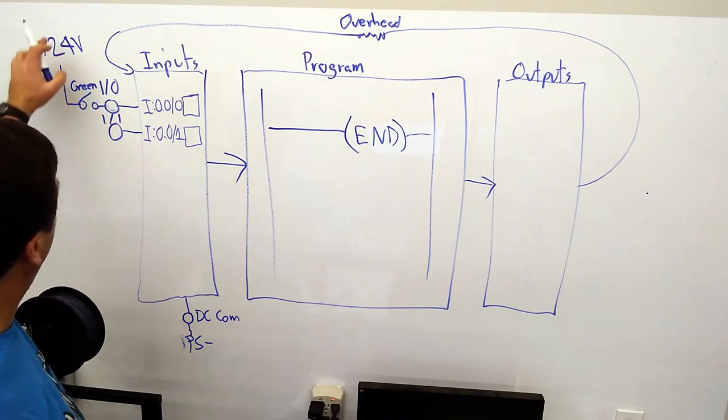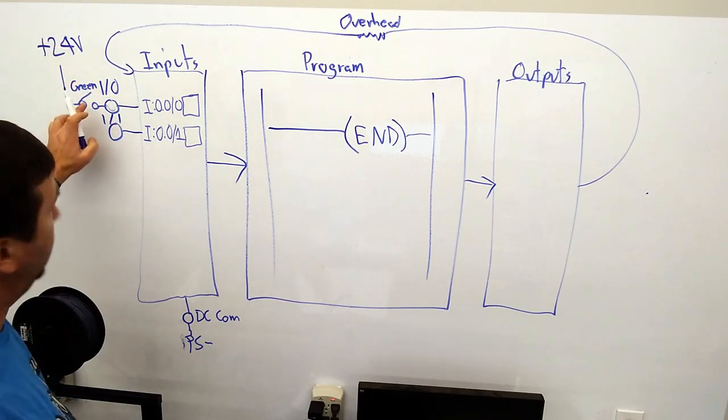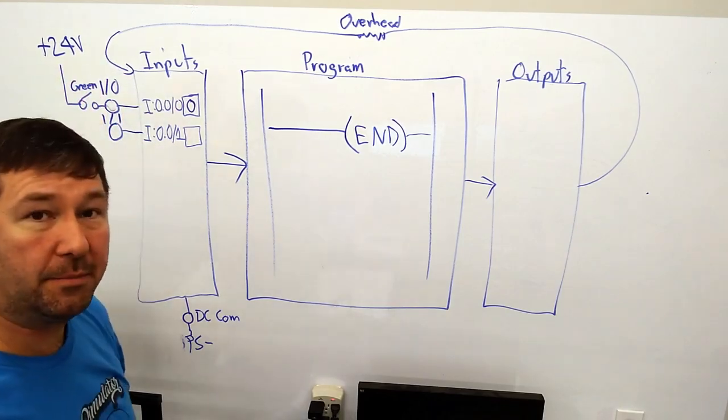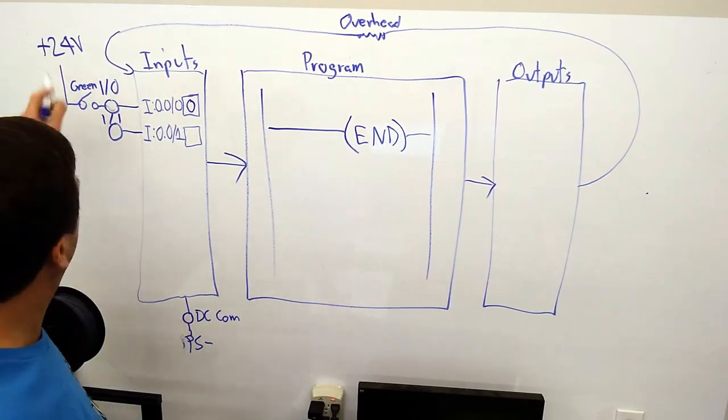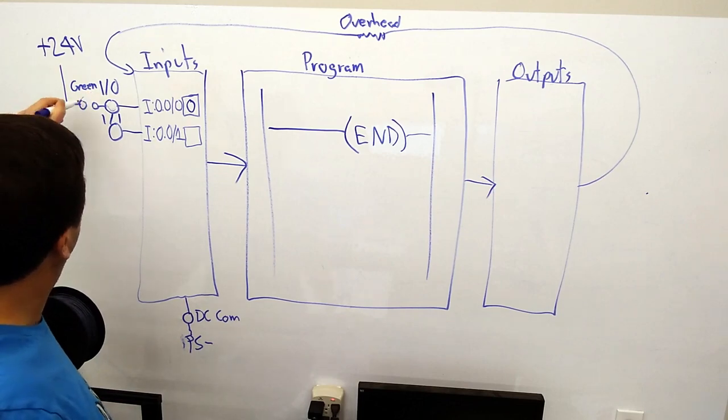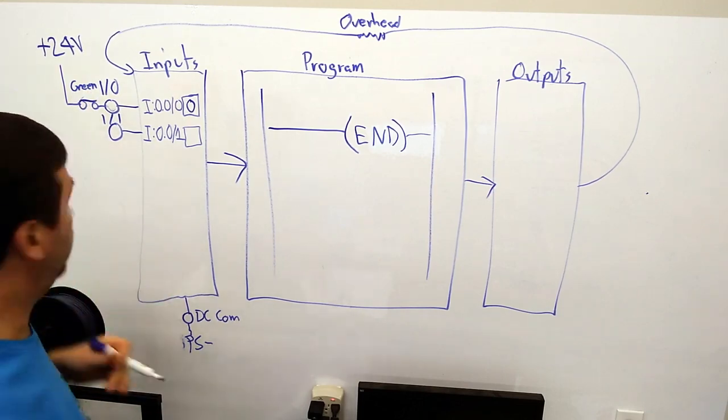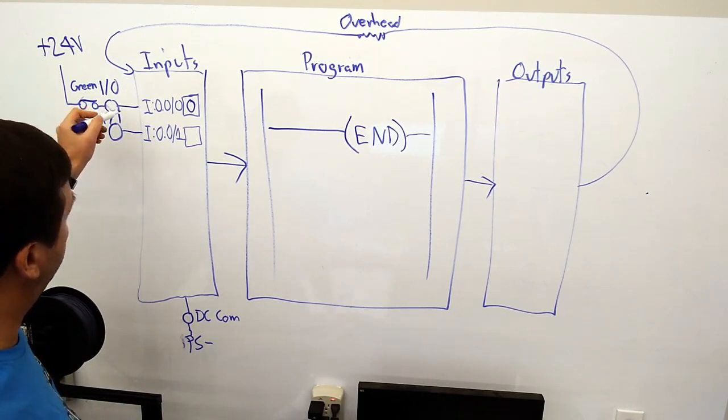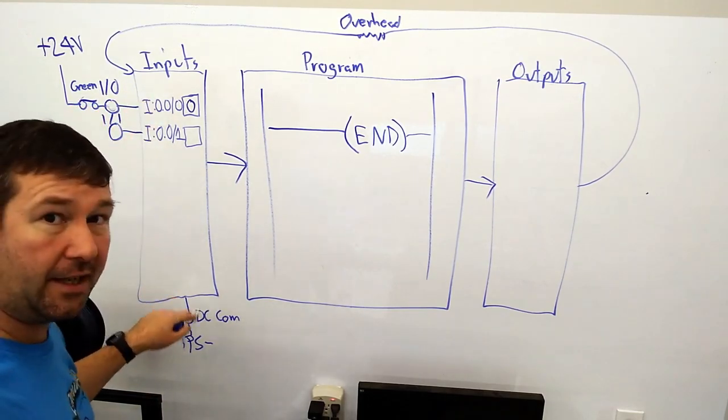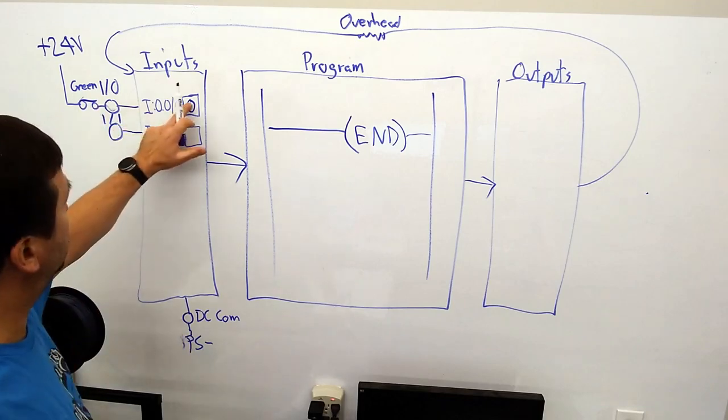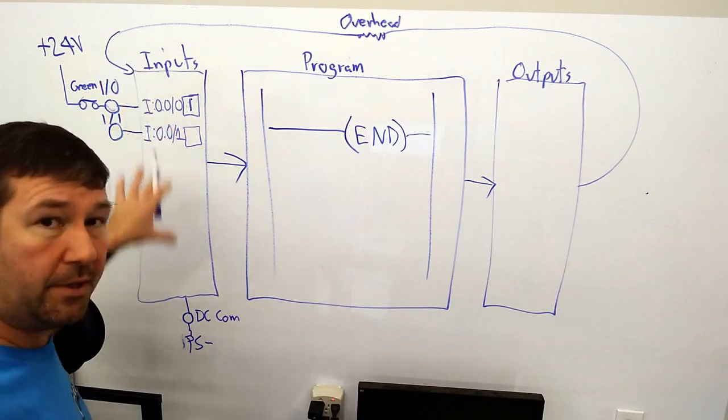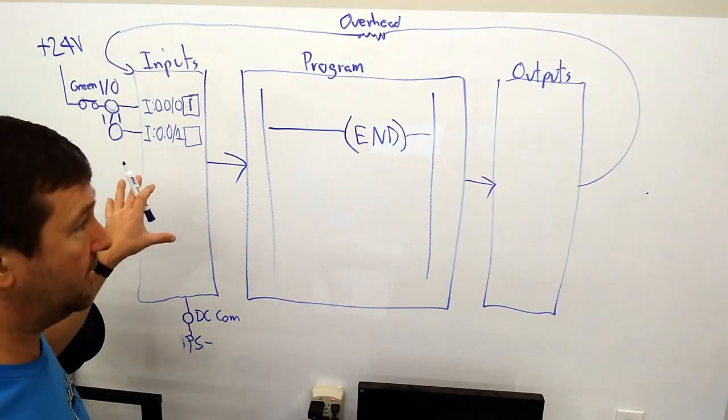So right now, we ask ourselves, do I have current? I have 24-volt, it's coming to here, but my switch is open, so it says no, and it puts a zero there. Now, if I close this switch and I ask myself, do I have current, I have 24-volt, my switch is closed, I have a continuous path to my terminal, module is good, I get to DC-COM, so yes, I do have current, and that will be a one. And it does this for every input each time it goes through its input scan cycle.